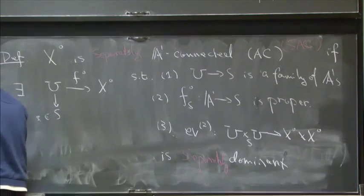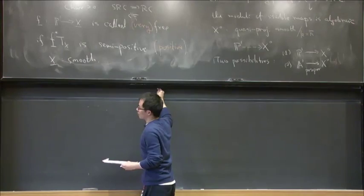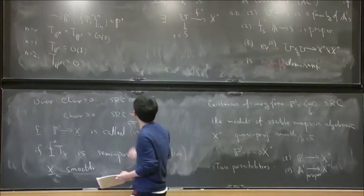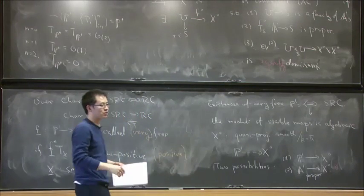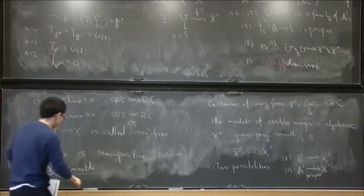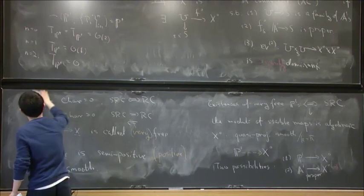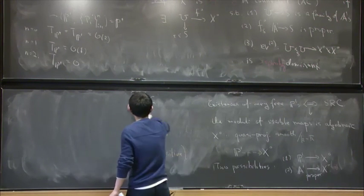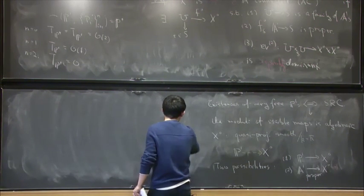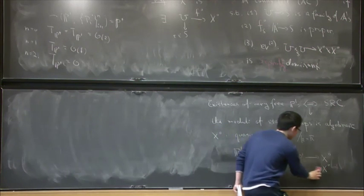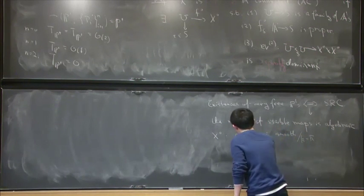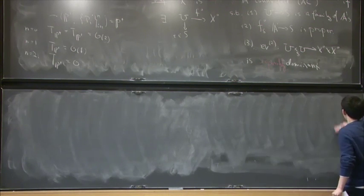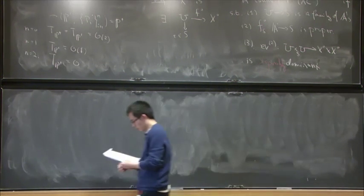But okay. So now here comes the question that, how are you going to verify which variety is A1 connected or not? Right? We're not going to write down a family like this. Basically impossible to do this. So we want to introduce very free A1s. But on the other hand, you don't want to deform A1 curves, because that's a non-proper variety. So we want to introduce something else.